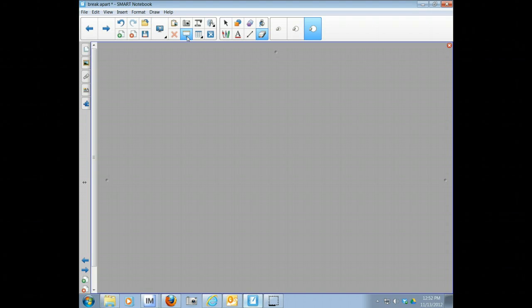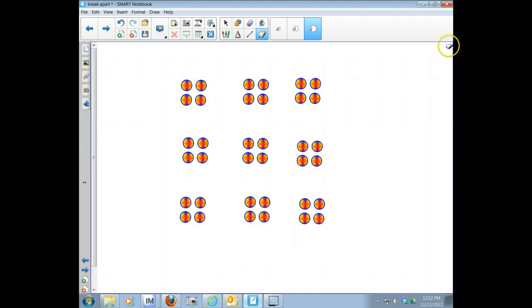Hopefully you noticed that there were groups of four. Well, how many groups of four are there? One, two, three, four, five, six, seven, eight, nine. So we have nine groups of four, which gives us a total of 36.